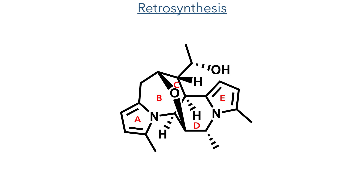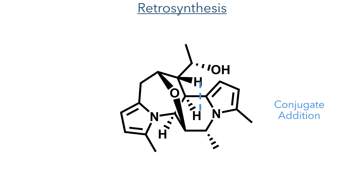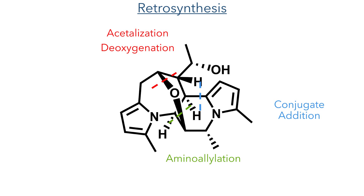Bipolamine I is quite an interesting target as it has a densely functionalised pentacyclic framework with seven contiguous stereocenters and two electron-rich pyrrole groups. This pyrrole electron density could be harnessed to form one of the rings through a conjugate addition reaction. The stereochemistry for this addition could be templated by first installing the bridging ether through an acetylization and deoxygenation sequence, and the precursor to this could be stereoselectively synthesised using a metal-catalyzed amino allylation reaction.